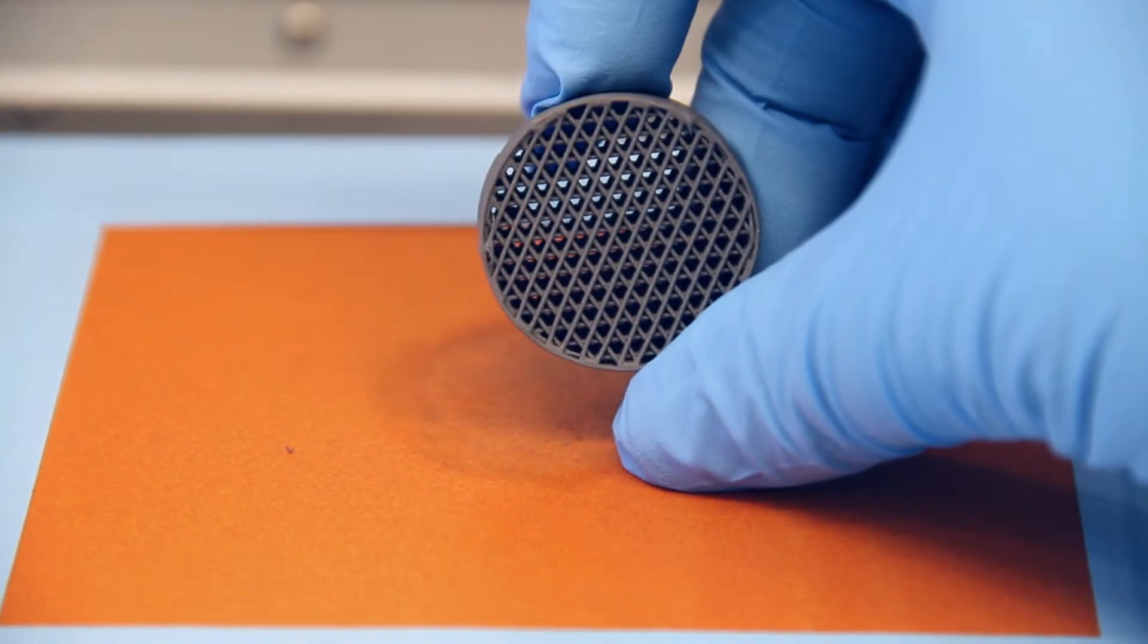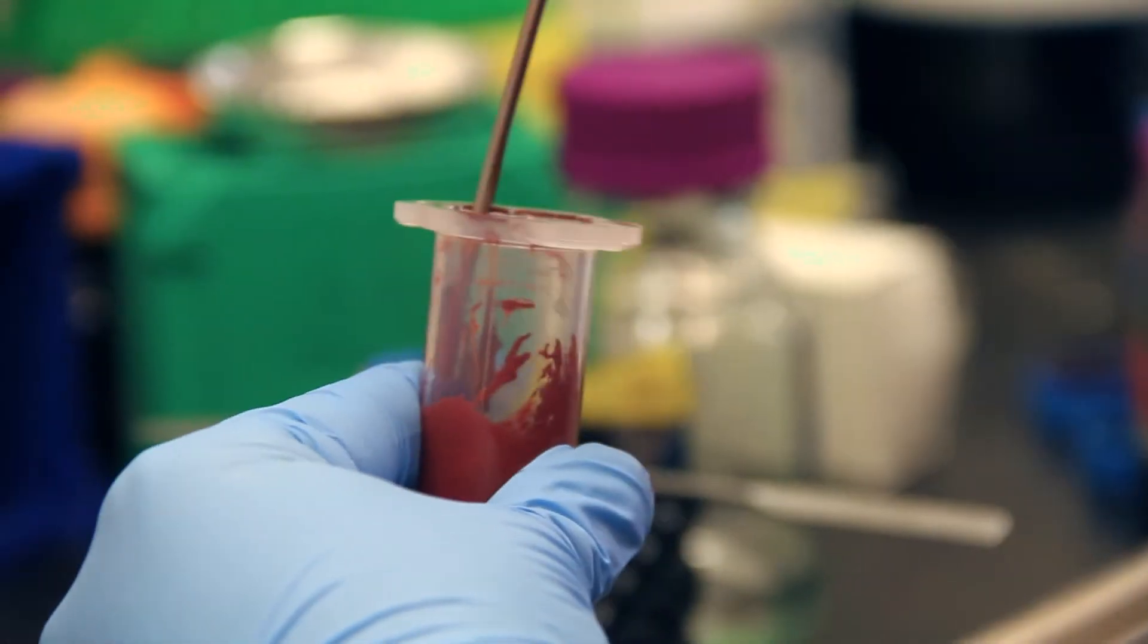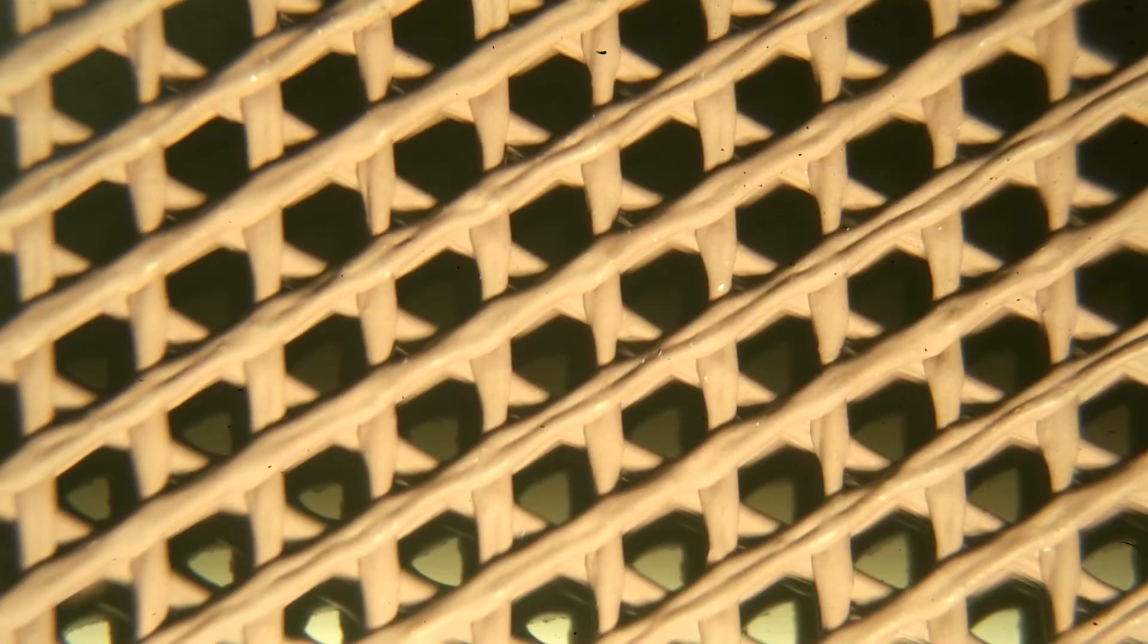Those metal particles can be alloys, or in many cases not metals at all but metal oxides. So we can create any kind of metal oxide, metal, or alloy-based ink, 3D print it, and get a final metallic structure at the end.